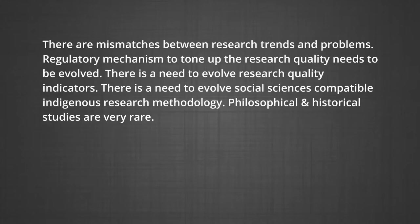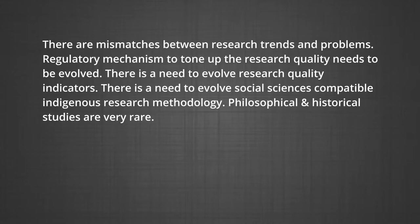There are mismatches between research trends and problems. A regulatory mechanism is needed to tone up research quality — research quality indicators need to be evolved. There is a need to evolve a social-science-compatible indigenous research methodology. Philosophical and historical studies are very rare, and there is more quantitative research than qualitative. The stereotype is no more acceptable in the research society — it needs to be divergent, updated, and truly need-based.